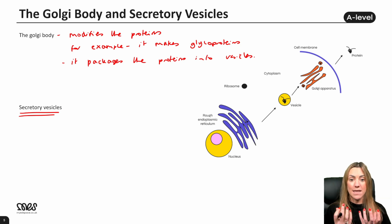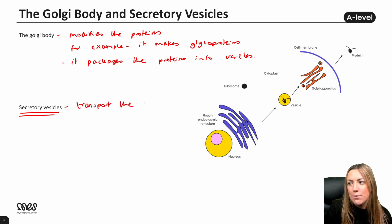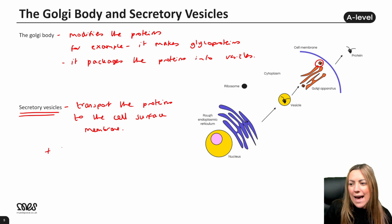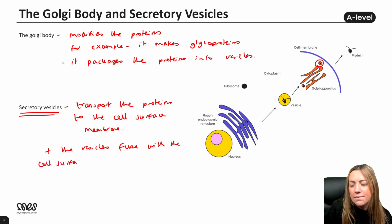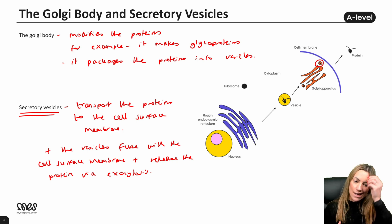Once the Golgi body has modified the protein and packaged it into a vesicle, the vesicle buds off from the Golgi body. These are called secretory vesicles because they carry the protein to the cell surface membrane where it can leave the cell. The vesicles transport proteins to the cell surface membrane, fuse with it, and release the protein on the other side via a process called exocytosis — where a vesicle fuses with the cell membrane and releases its contents outside of the cell.